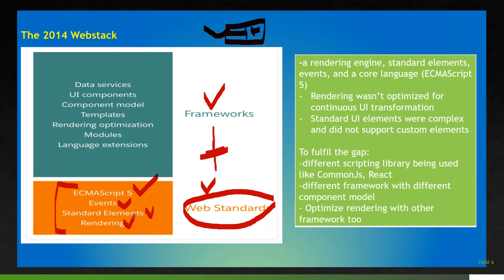But if I wanted to optimize rendering, the web standard didn't support that. So to optimize rendering I had to work within my framework. In 2014 with Lightning Component, we were more dependent on the framework rather than the web standard. So if you developed an application in your framework, you wrote the logic for many things in the framework rather than relying on web standards.